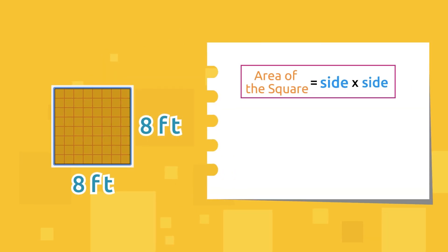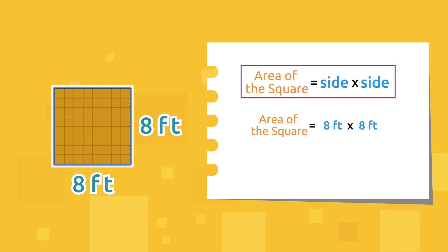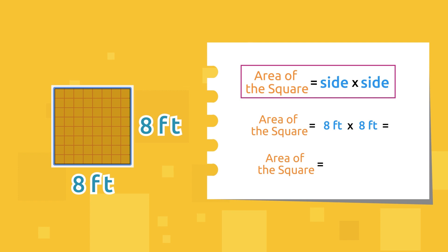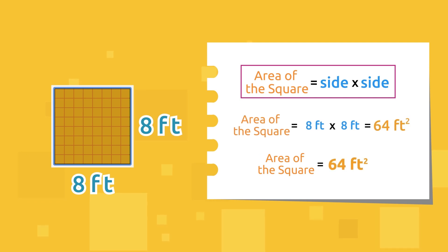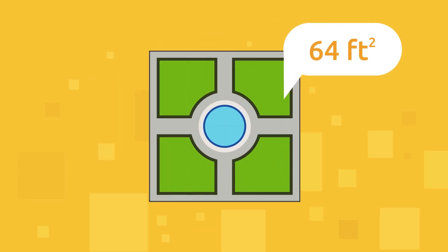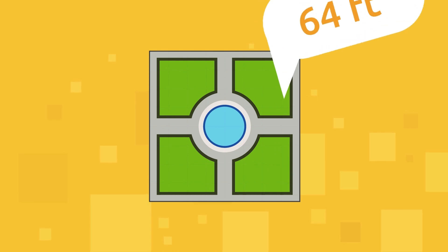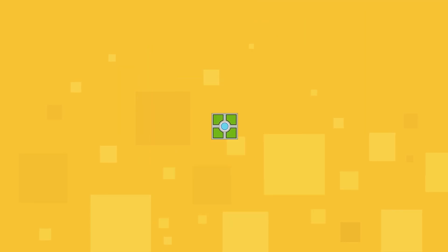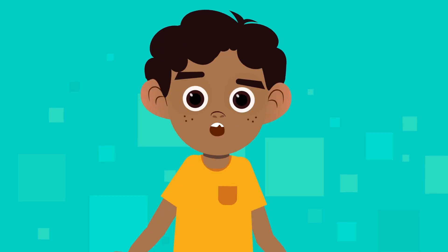To find out, we need to calculate the area of this square. We're going to multiply one side by the other, meaning eight times eight. Eight times eight is 64! The garden will have a surface area of 64 square feet.